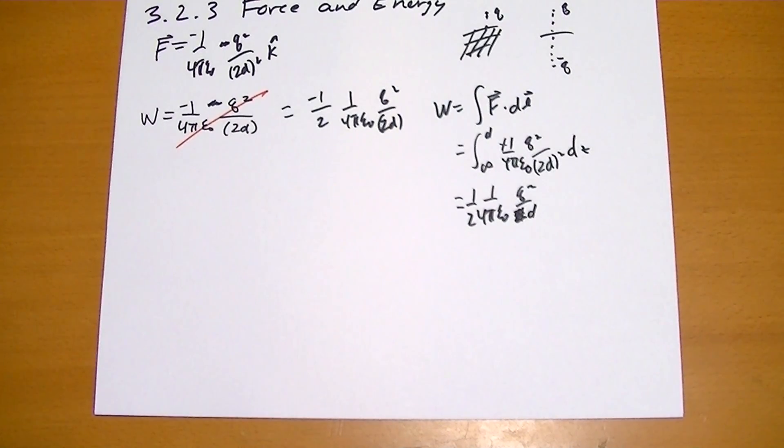So, why is the work half? Well, the answer is we're only moving one charge. The charge that accumulates on the plate, at every point that that moves, there's no electric field to oppose it. There's no work done on that charge.